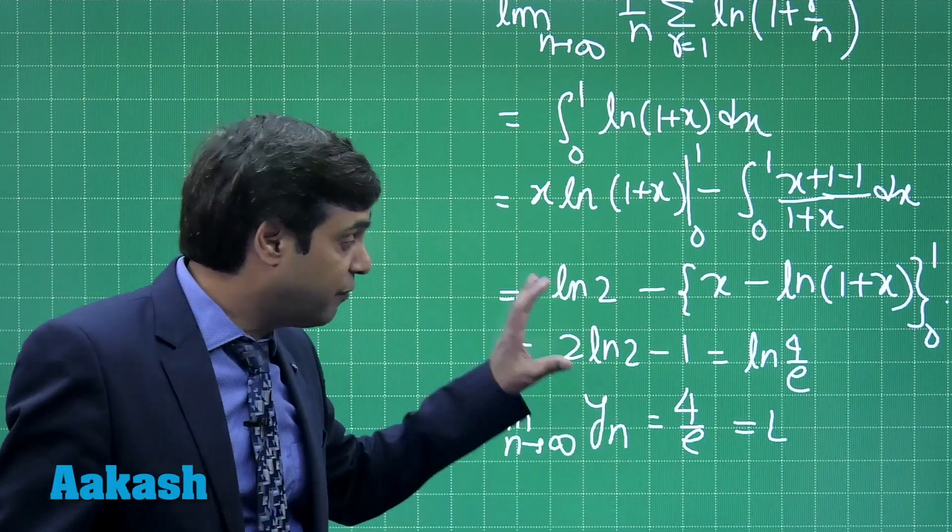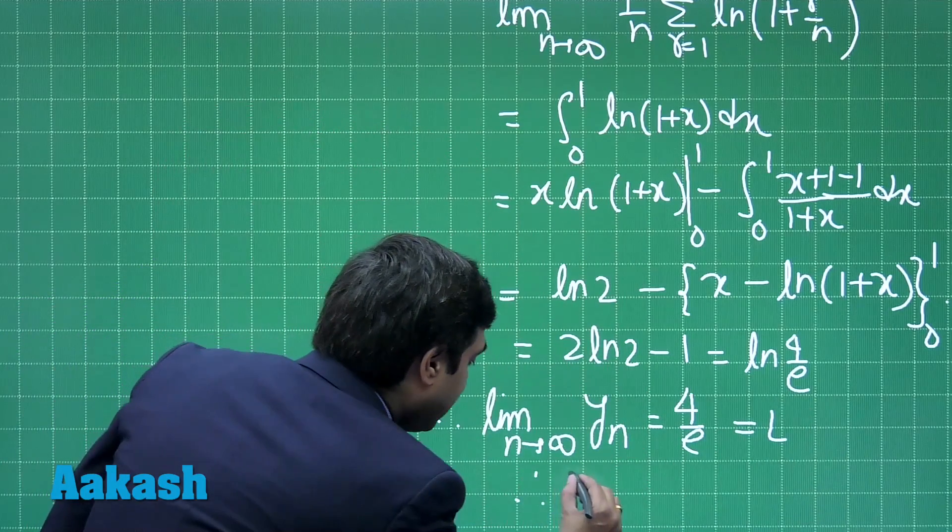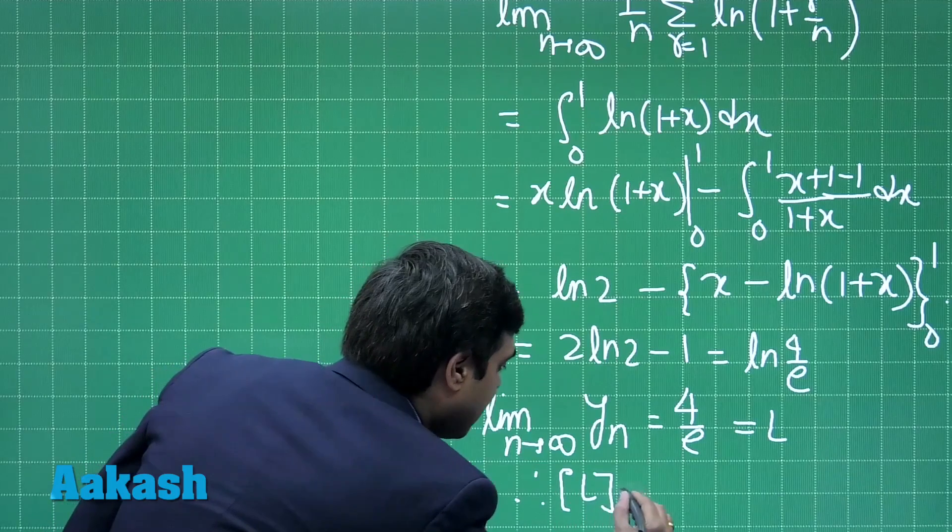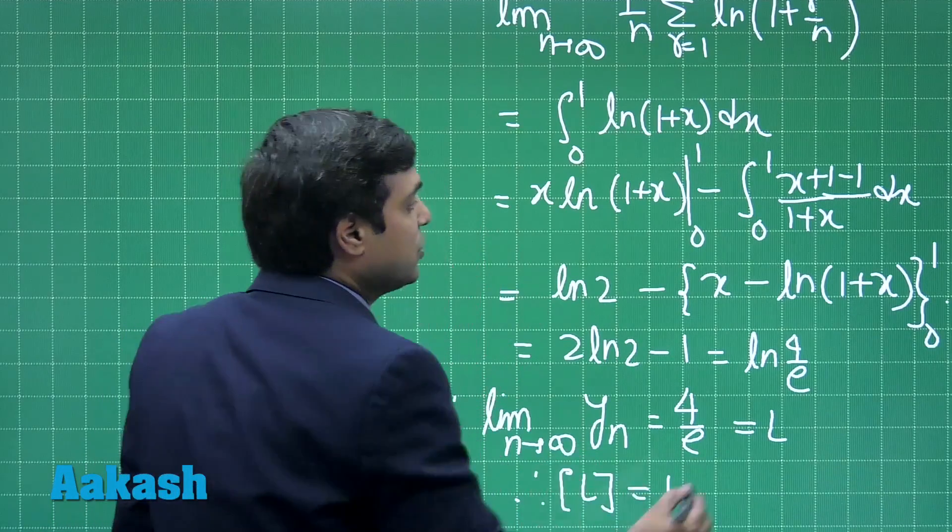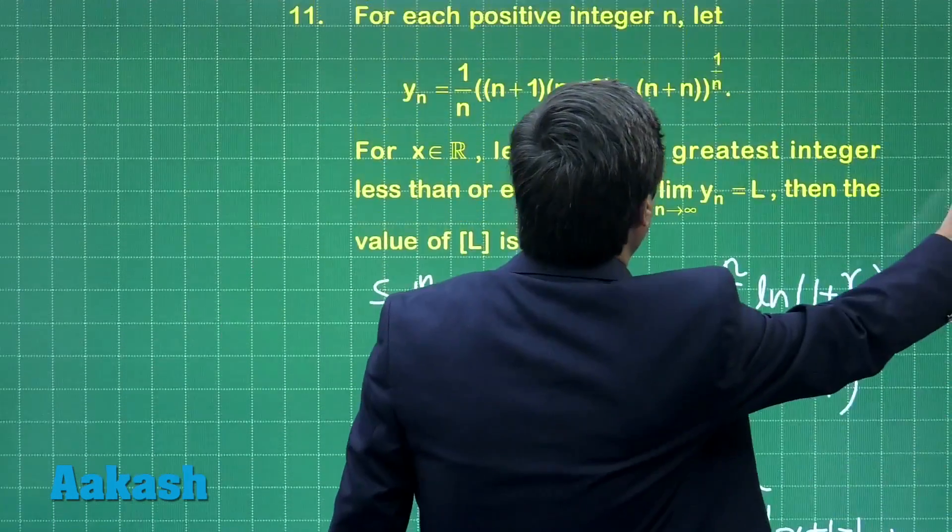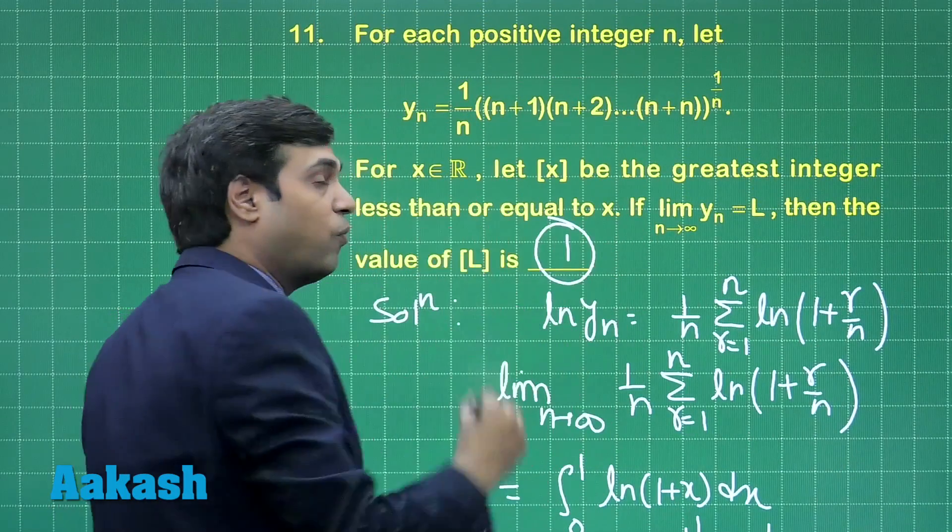What is the value of greatest integer L? We can clearly see here greatest integer L comes as 1. So answer for this question was asked as 1.